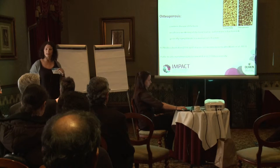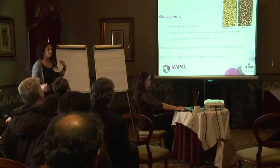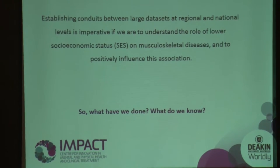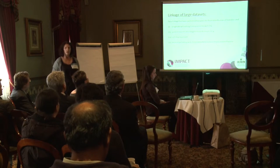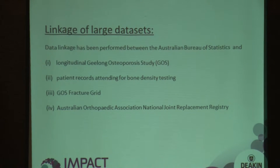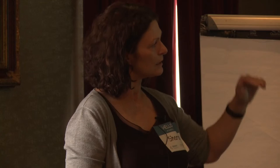I want to show how we've harnessed big data sets — and also linked big data in different ways — to present this social gradient of musculoskeletal disease; it is observed in bones too. What have we done? What do we know now about the social gradient of musculoskeletal disorders? We have large data sets that we've linked. I'm going to focus on how I've used ABS data and linked it with different factors.